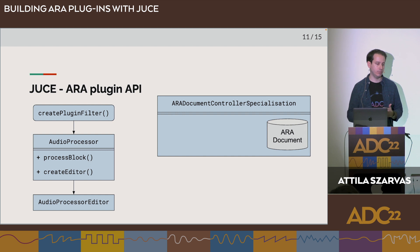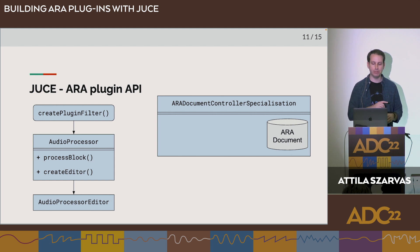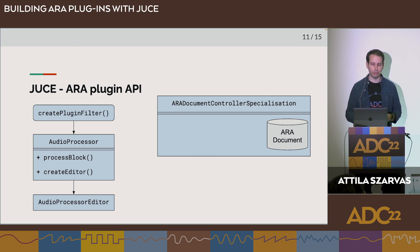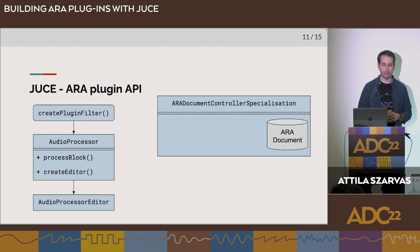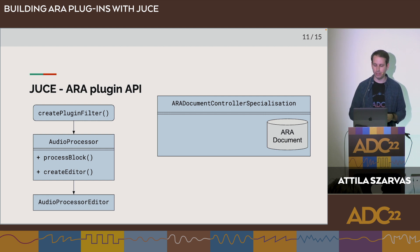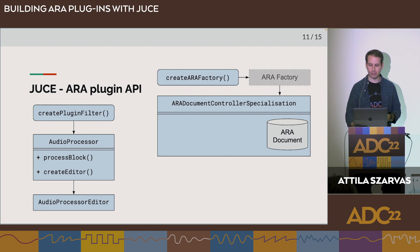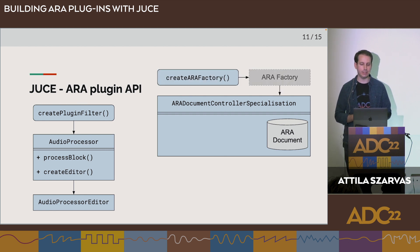A document controller can also provide useful functionality to the DAW on its own — for example, an ARA plugin can provide analysis features like identifying what notes are being played back in an audio source. There are no restrictions on the lifetime of the document controller and audio processor; it's possible that a DAW will only instantiate a document controller without an audio processor. Because of this, we need another entry point: in JUICE, this is the create_ARA_factory freestanding function, returning an ARAFactory object.